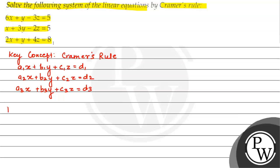The determinant D is formed with elements A1, B1, C1 in the first row, then A2, B2, C2 in the second row, and A3, B3, C3 in the third row. Cramer's rule gives a unique solution when this value of determinant D is not equal to 0.